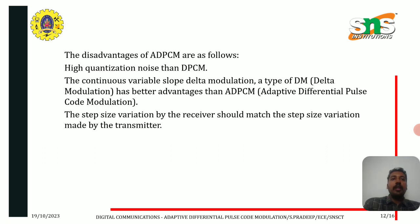The disadvantages of ADPCM are as follows. High quantization noise compared to DPCM is one of the disadvantages of ADPCM when compared to PCM and DPCM. The continuous variable slope delta modulation, a type of DM, has a better advantage than ADPCM. Also, the step size variation by the receiver should match the step size variation made by the transmitter.